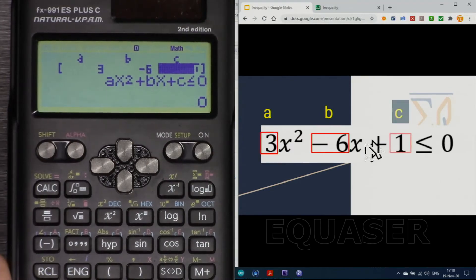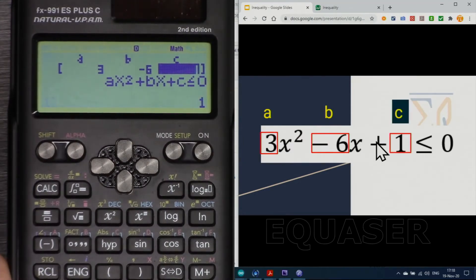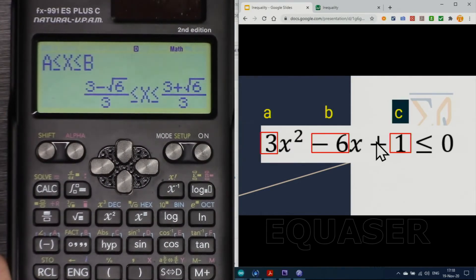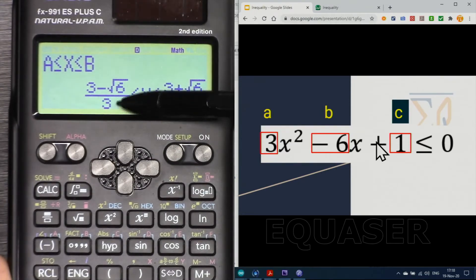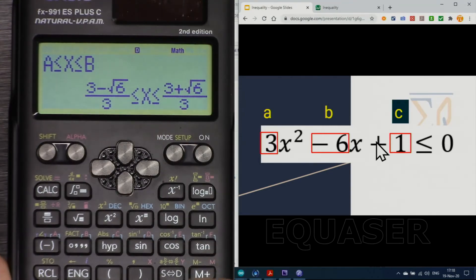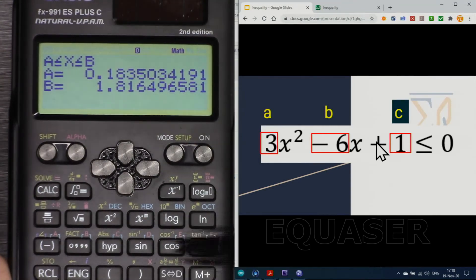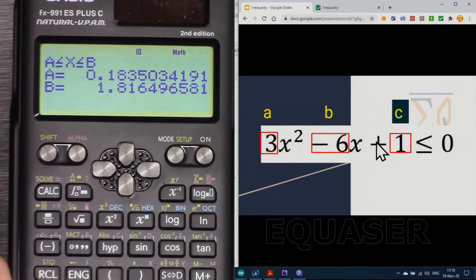Here a is 3, this time the coefficient, and then b is -6. And then c is 1. And if I press equal we see this value: x is greater than this value and x is smaller than this value. But let's just press this button, standard and decimal, so we can see it properly.